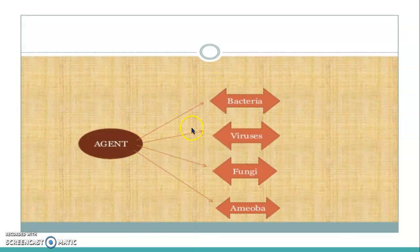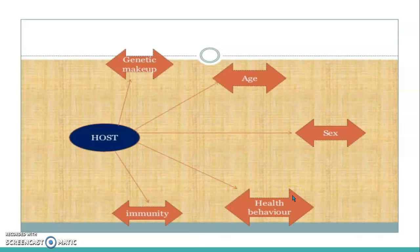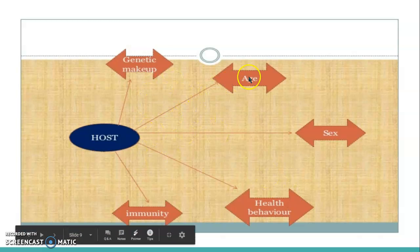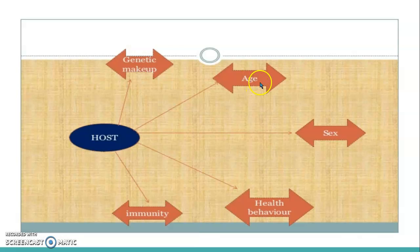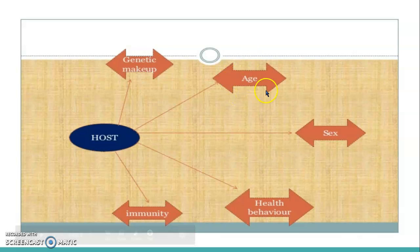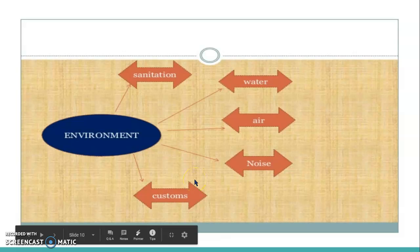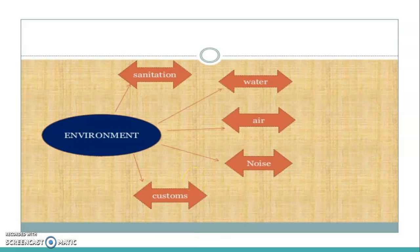Here you can see the agent category includes bacteria, virus, fungi, and amoeba — all germs are represented as the agent. The host has several factors like age, sex, health, behavior, immunity, and genetic makeup, which may affect the cause of disease depending on the age and sex of the person. The environment includes sanitation, water, air, noise, customs and culture, and behavioral patterns. So these three are linked and related to each other for causing a disease — this is called the epidemiological triad.